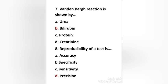Next question: reproducibility of a test is — accuracy, specificity, sensitivity, or precision? The right answer is option D — reproducibility of a test is precision. Accuracy refers to the closeness of a measured value to a standard or known value. Precision refers to the closeness of two or more measurements to each other. Specificity is the proportion of true negatives which actually test negative. Sensitivity is the proportion of true positives which actually test positive.